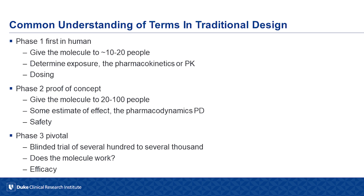I'd like to establish common understanding of some terms used in traditional trial design. Phase one trials are first-in-human studies where we give the molecule to about 10 to 20 people. We're trying to determine the exposure — the pharmacokinetics — what the body does to the drug: does it eliminate the drug unchanged from the kidney, or metabolize it via drug-metabolizing enzymes in the liver? From this we determine an appropriate dose, whether one milligram per kilogram or a hundred micrograms per kilogram.